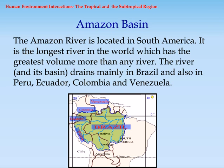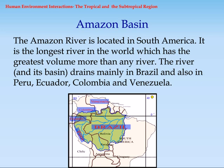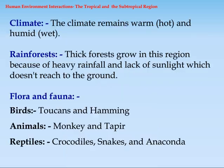Ecuador, Colombia, and Venezuela. Climate: The climate remains warm, hot, and humid, wet.